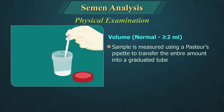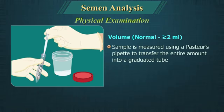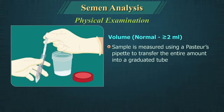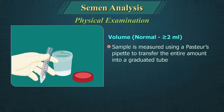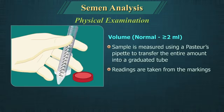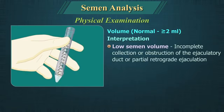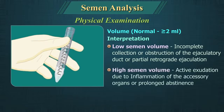Volume: The volume of the semen sample is measured using a Pasteur's pipette to transfer the entire amount into a graduated tube, and readings are taken from the markings. Low semen volume may be suggestive of incomplete collection, obstruction of ejaculatory ducts, or partial retrograde ejaculation. High volumes may be associated with active exudation due to inflammation of the accessory organs or prolonged abstinence.